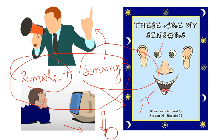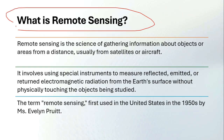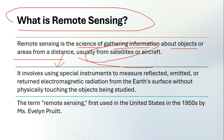When we combine the sensing term with remote, it means that when you are gathering information about anything from a remote distance, that will be known as remote sensing — like satellites capture pictures of the earth surface and gather information without touching it. The proper definition: it is the science of gathering information about objects or areas from a distance, captured by satellite or aircraft. This process involves multiple instruments which measure reflected, emitted, and returned electromagnetic radiation.